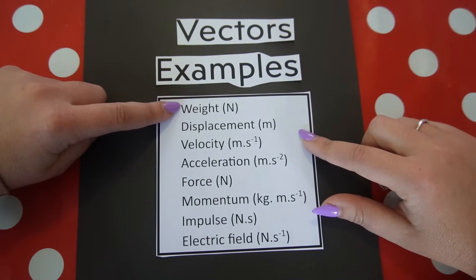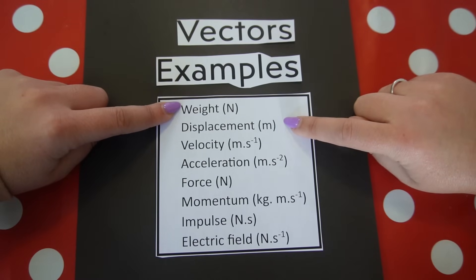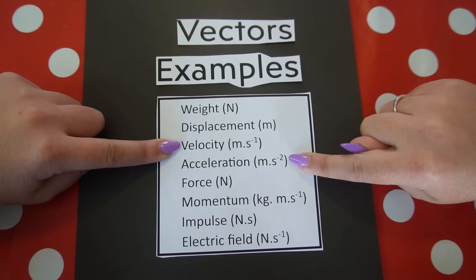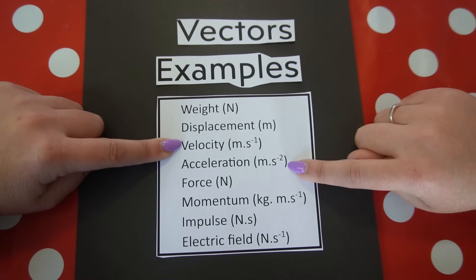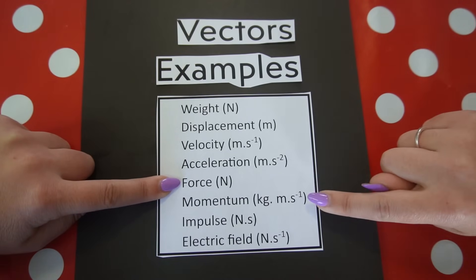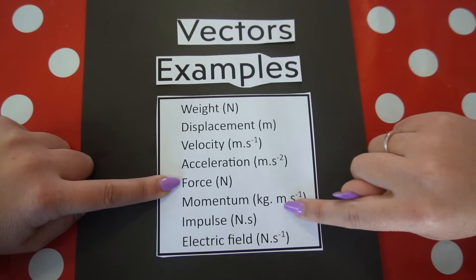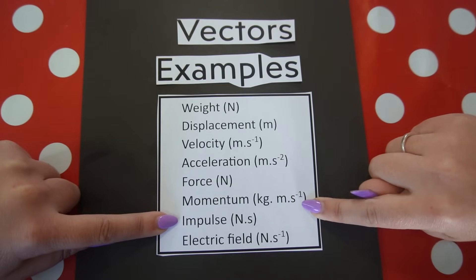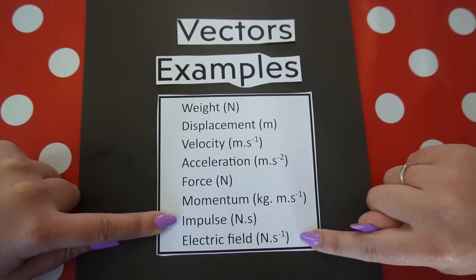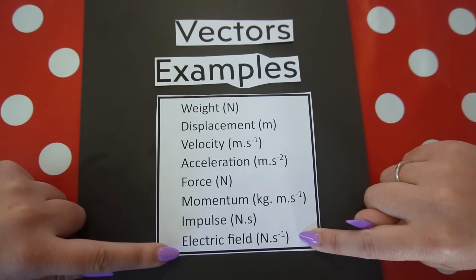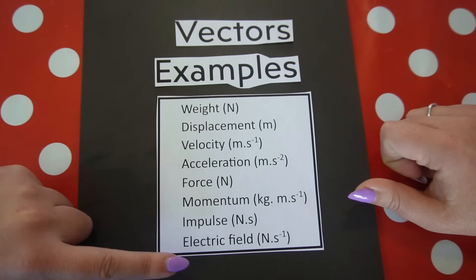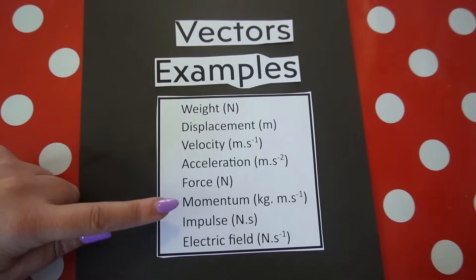Examples of vector quantities include weight (measured in newtons), displacement (meters), velocity (meters per second), acceleration (meters per second squared), force (newtons), momentum (kilogram meters per second), impulse (newton seconds), and electric field (newtons per coulomb). Not all of these will be dealt with in Grade 10, but it's important to be able to list examples of vectors.